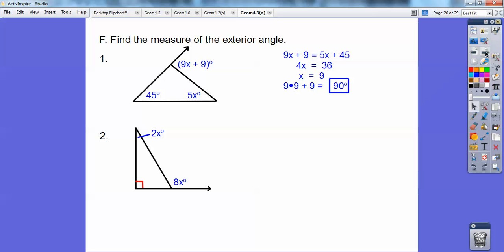Do that with this one. That 8X is equal to 90 plus 2X. So I get X equals 15, so you should get 120 for that exterior angle. Okay, nice and easy.